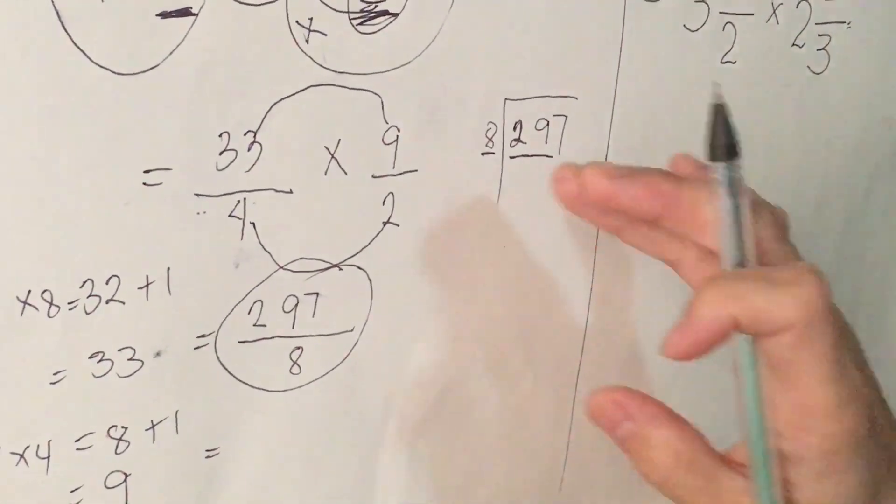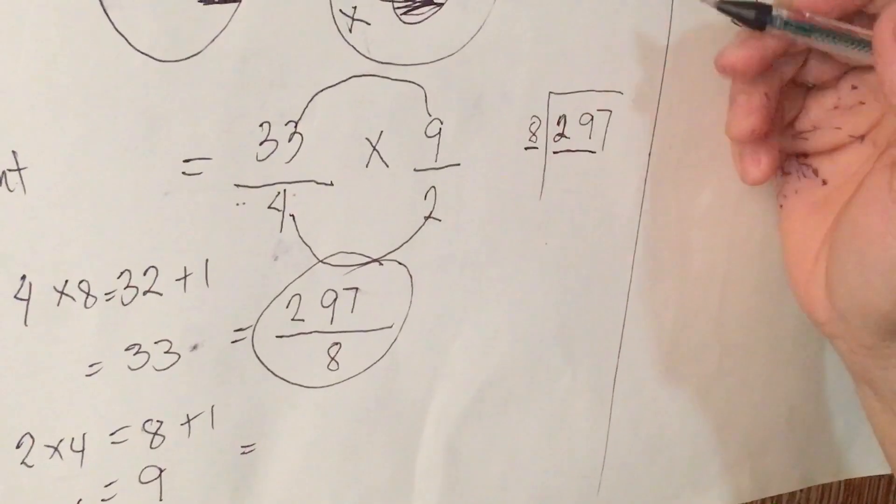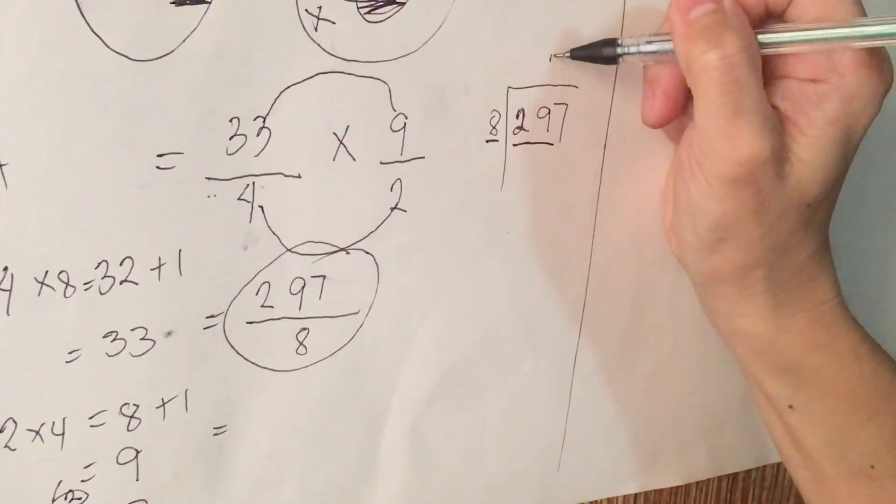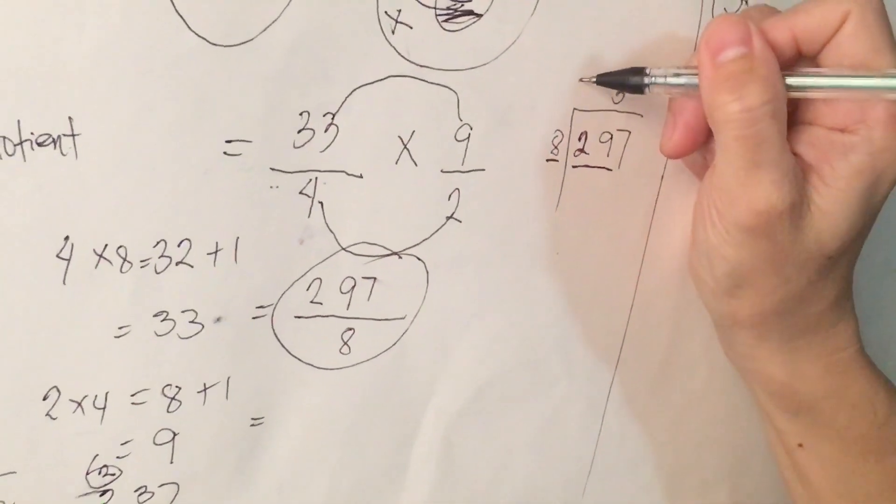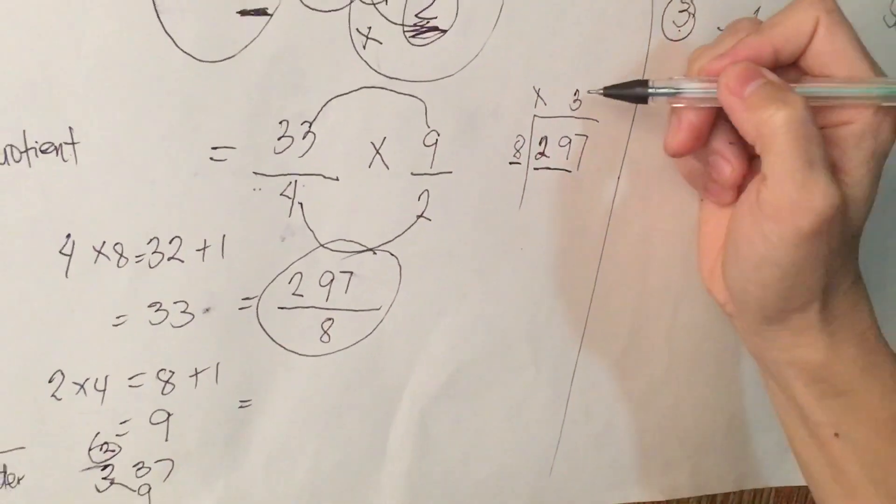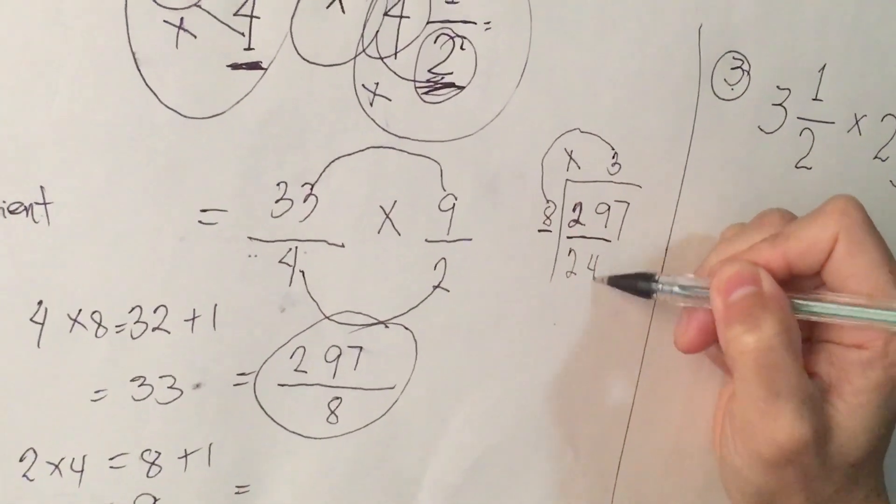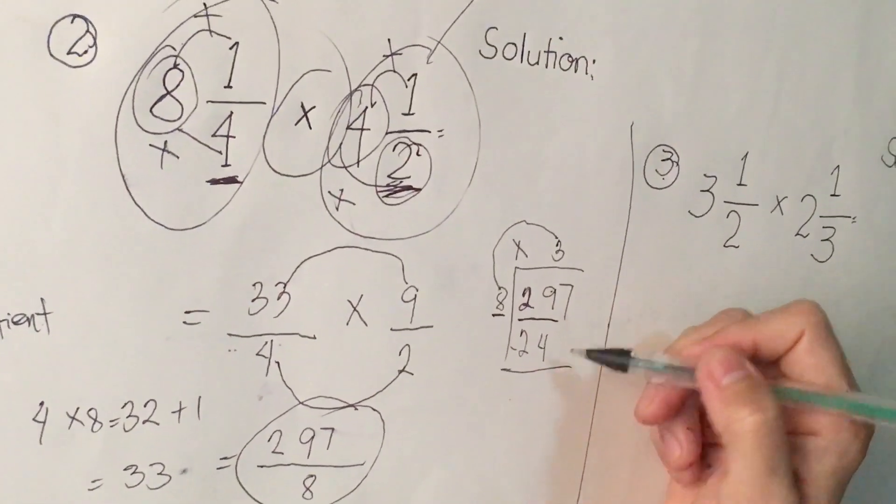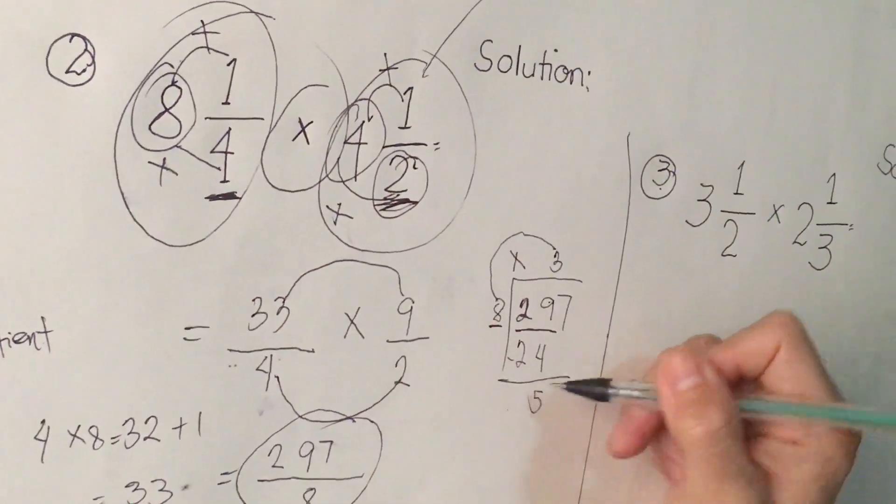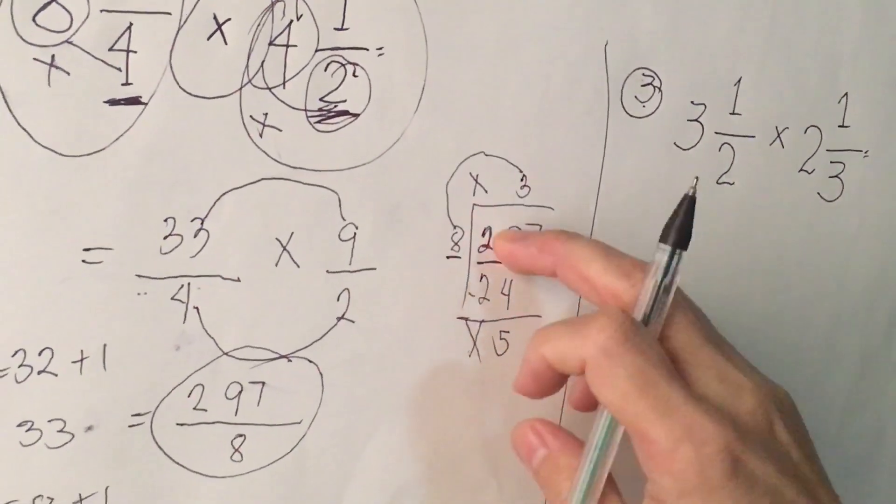How many 8 in 29? So we're going to write here 3. Multiplication symbol, 3 times 8. I'm going to write here 24. Next, 9 subtract to 4, I'm going to write here 5. Then I put x just because x is the value of 0. This is 2 minus 2.